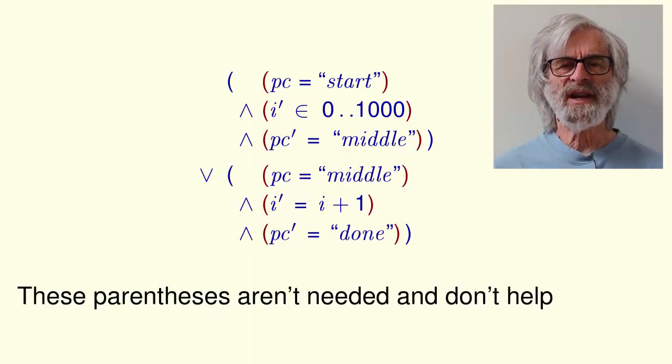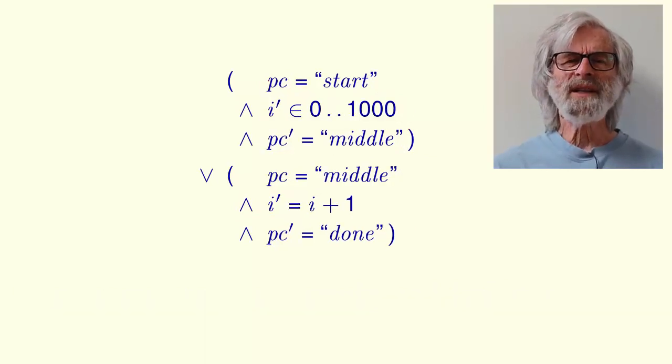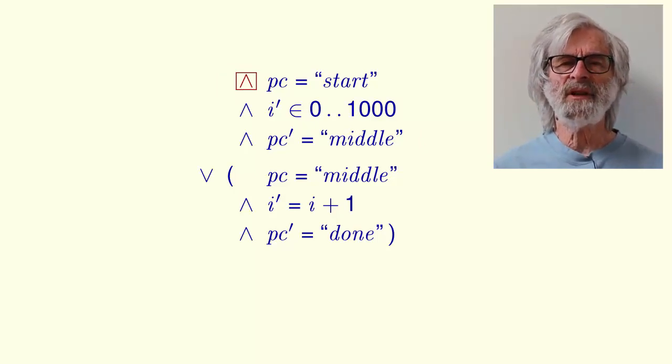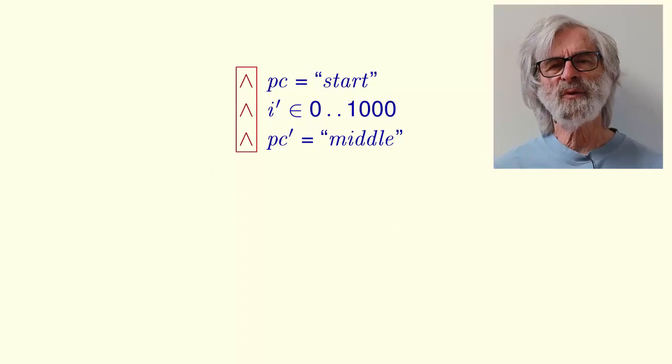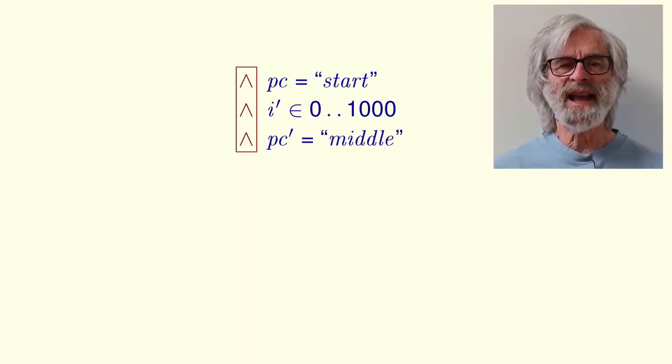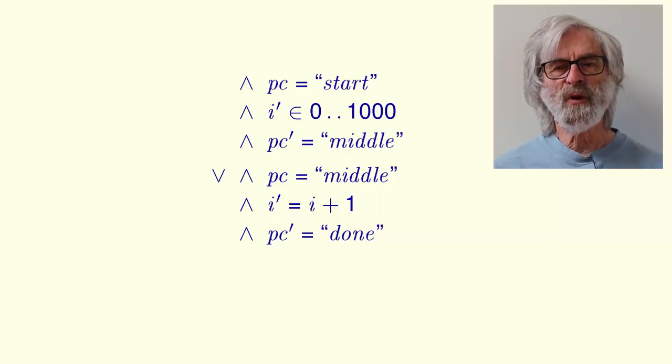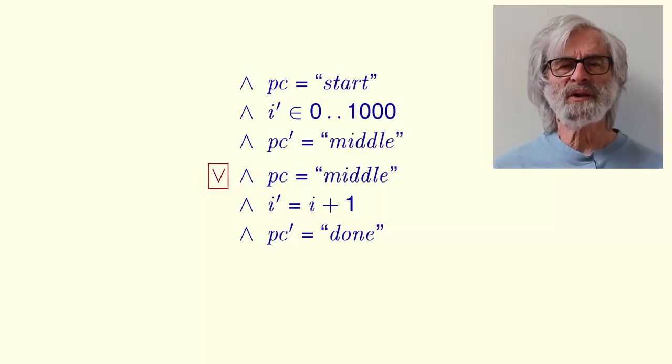These parentheses aren't necessary and with this formatting they don't help. So let's remove them. Widely separated matching parentheses make formulas hard to read. They're not very far apart here, but they could be in a larger formula. TLA plus lets us eliminate them by adding this extra AND symbol. This turns the sub-formula into a bulleted AND list that is ended by any following token to the left of the AND symbols. As if these parentheses were there. Let's do the same thing with this sub-formula. Let's do the same thing for the OR. TLA plus also allows bulleted OR lists. There are implicit parentheses around the formula.